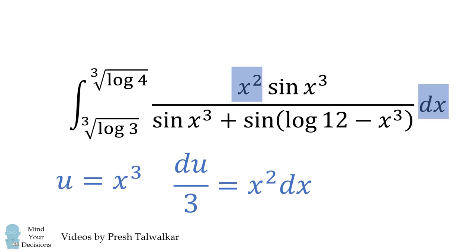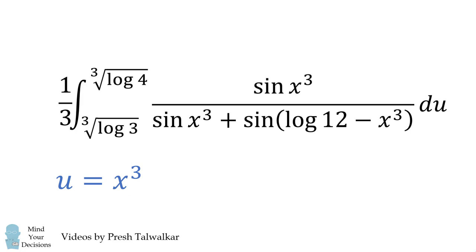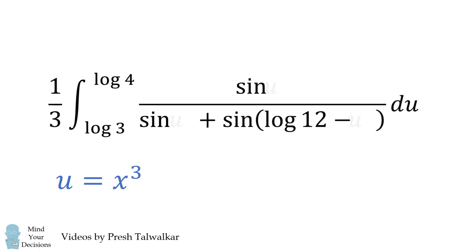So we can substitute in for x squared dx, du over 3. We then factor this one third out of the integral. Now let's do this substitution u equals x cubed. It'll simplify the limits of integration and the arguments of the functions.